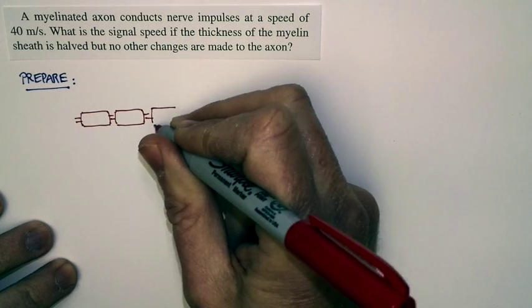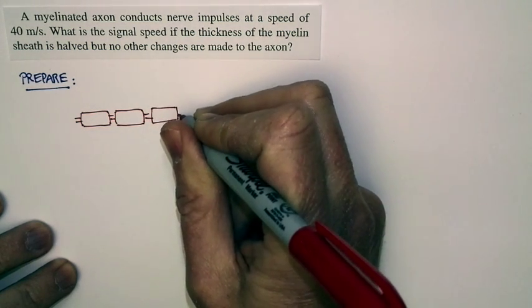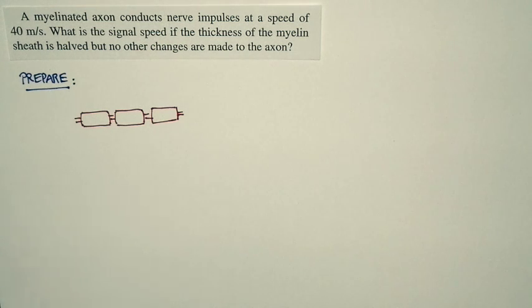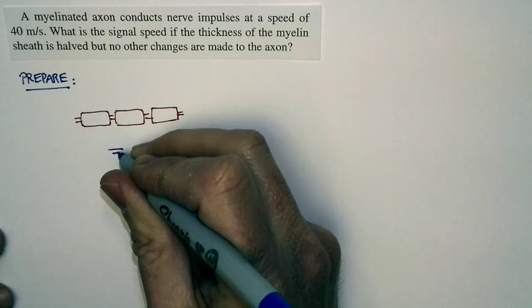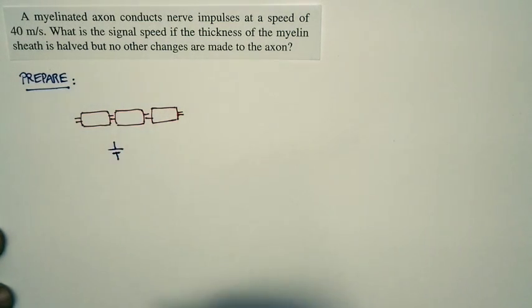And we analyze signal propagation as an RC circuit. We say an action potential is triggered at one of the nodes. Well, that looks like basically turning on a power supply.